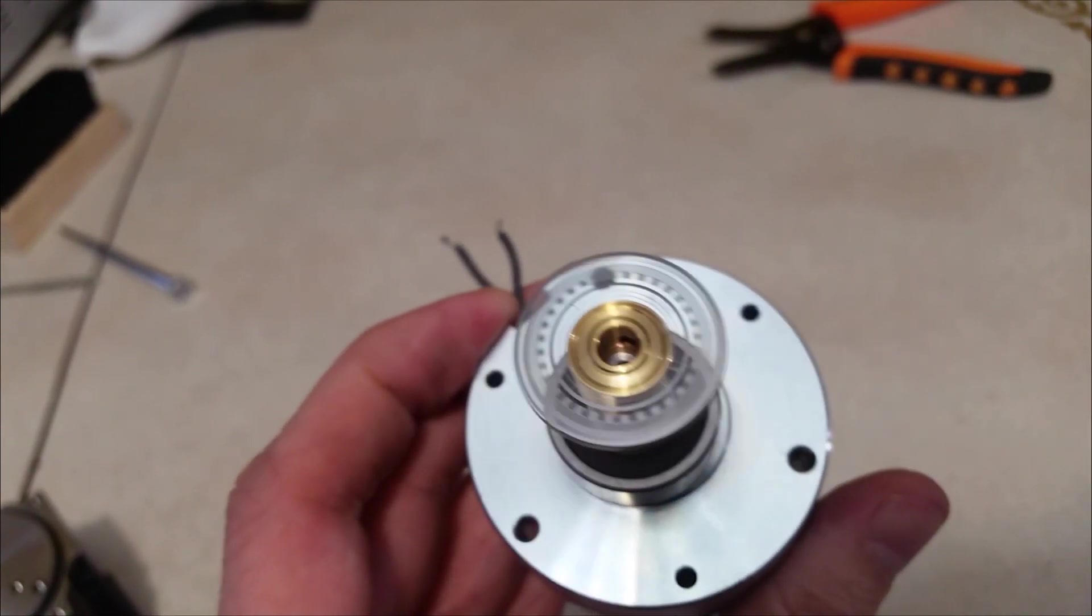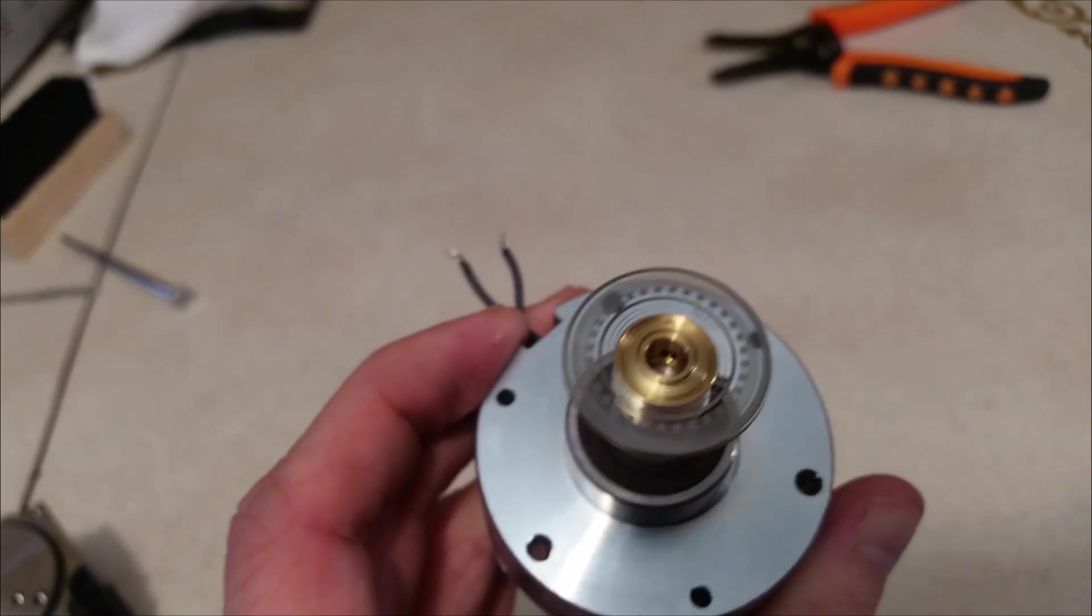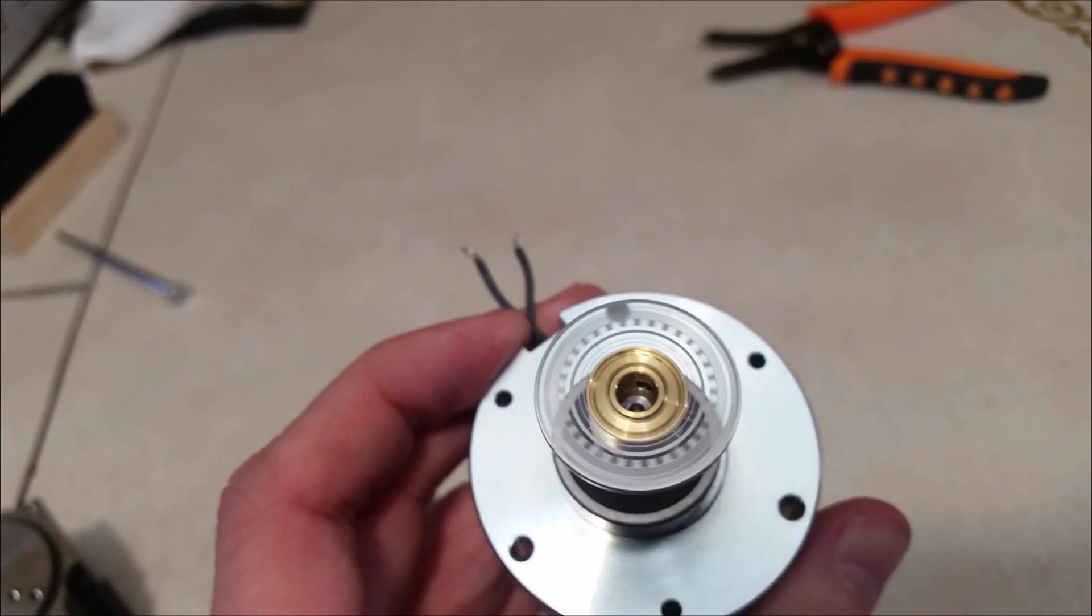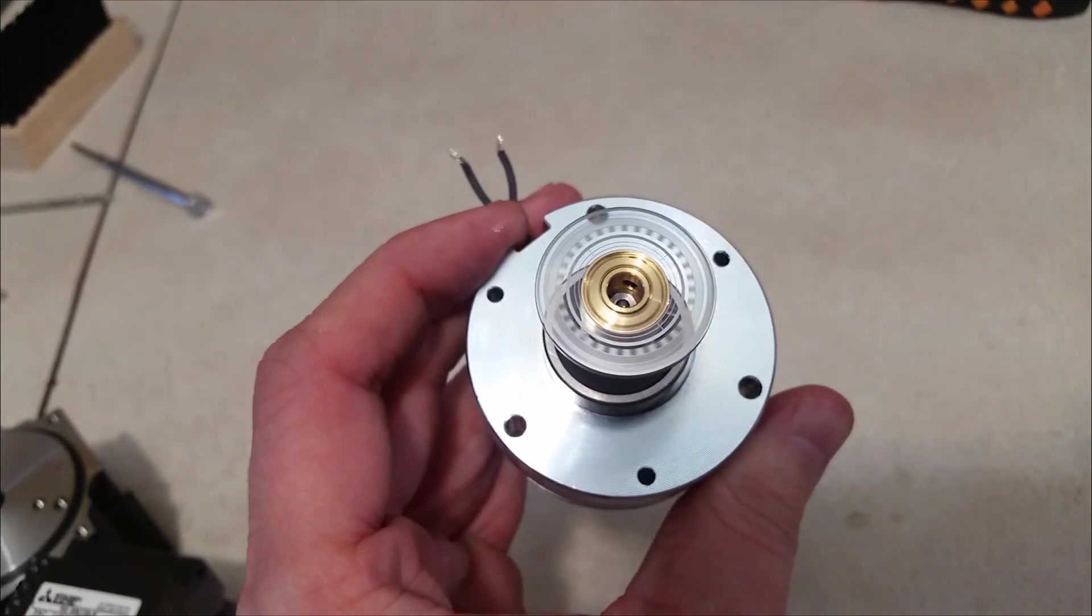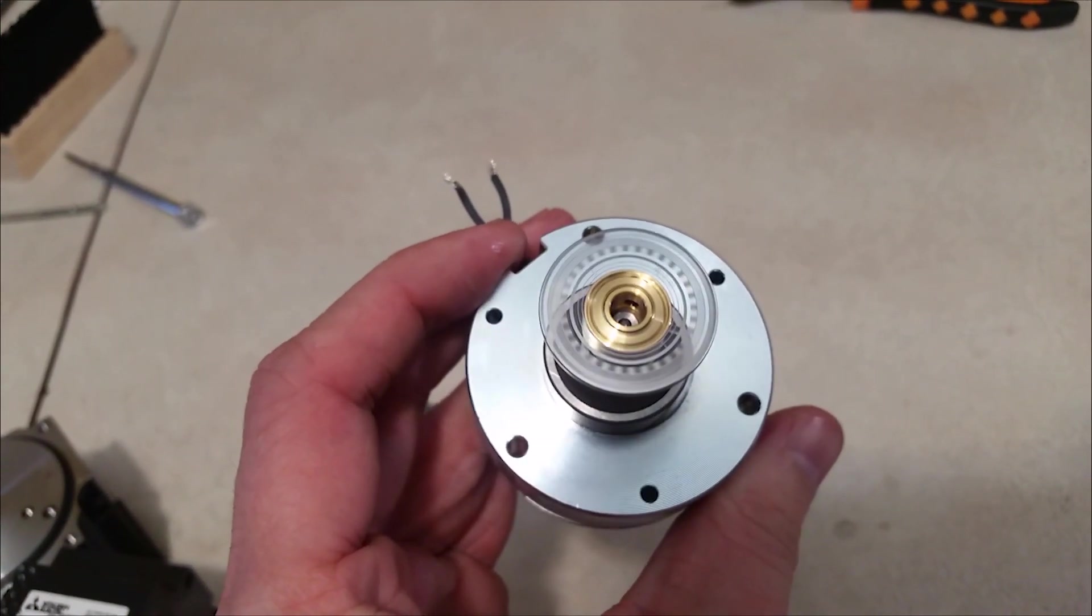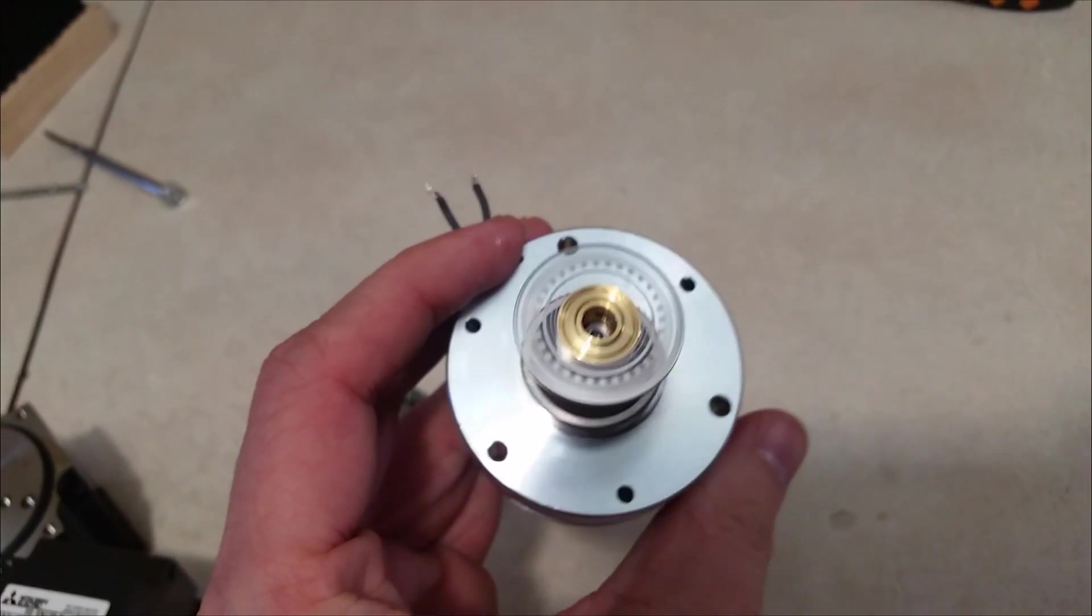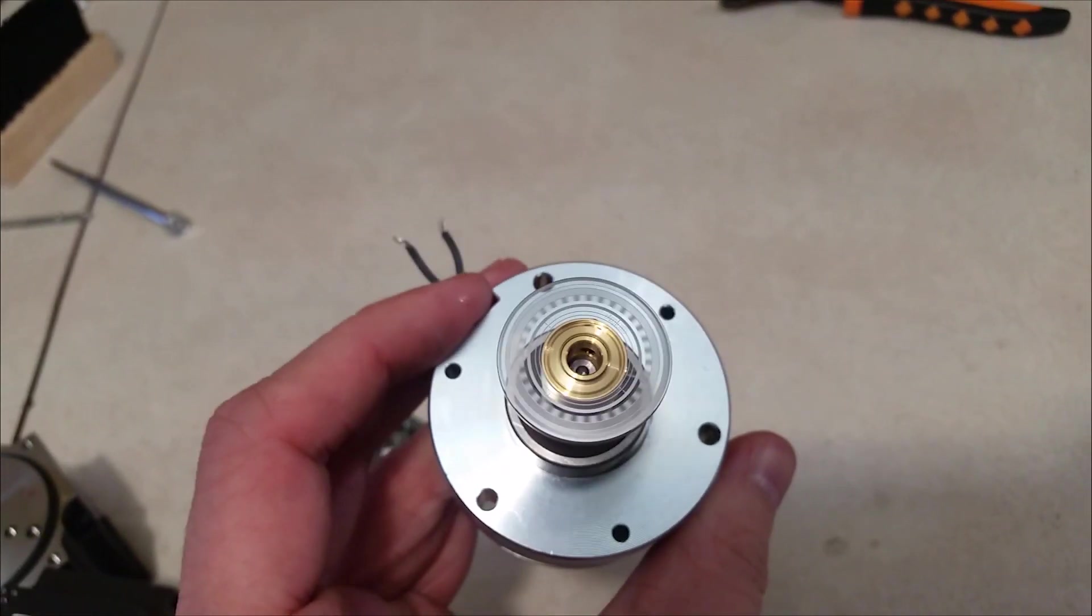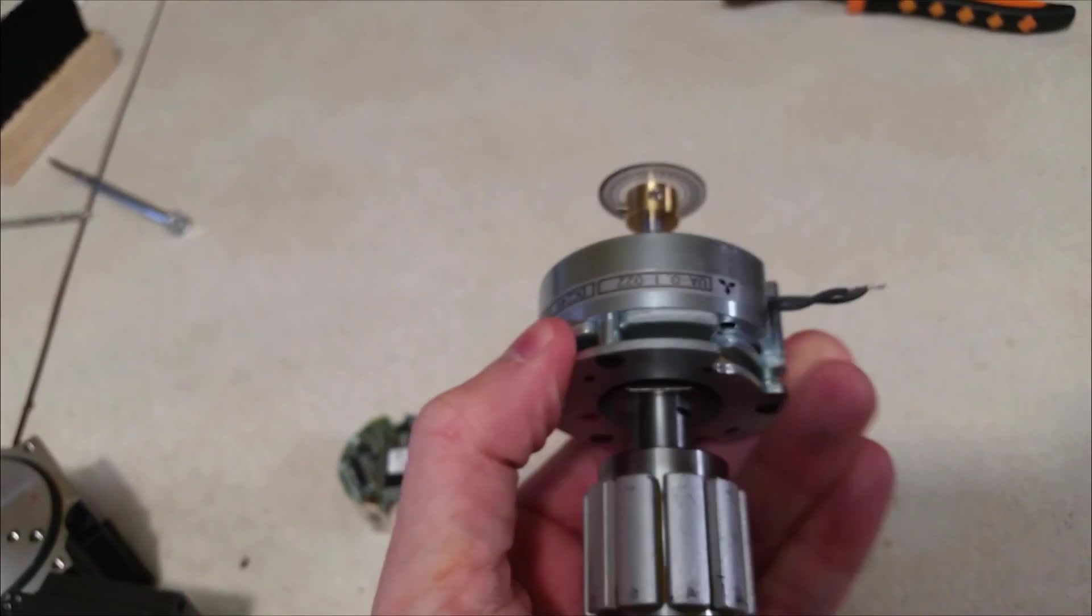And the machines that we have are typically within, or build rather, are typically within a thousandth of an inch. But these servos are regularly keeping track of a hundred thousandth, a three hundred thousandth of an inch. Really, really small numbers. So they can be very, very accurate.